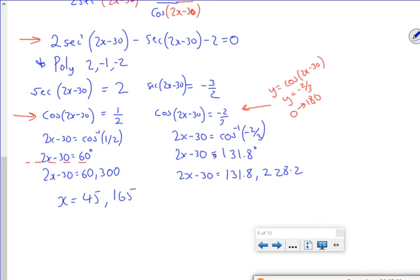And then for these ones, so what have I got? So I've got 161.8 divided by 2 is 80.9. And then 228, add on the 30 is 258.2. Half that, 129.1. There.